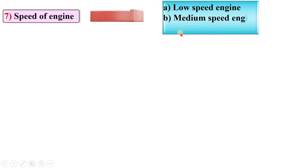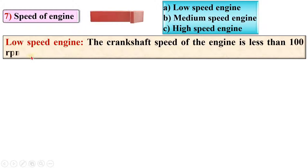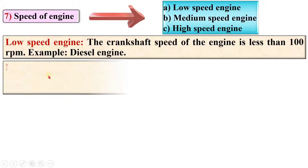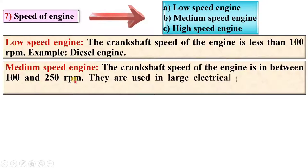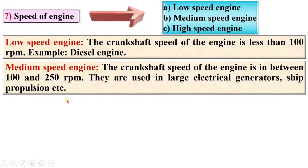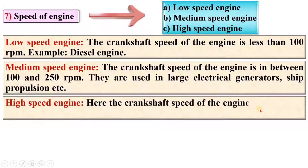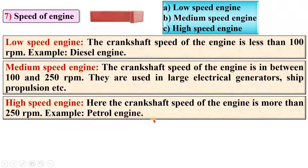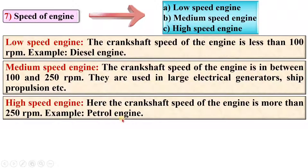According to the speed of the engine, IC engines are classified as low-speed, medium-speed, and high-speed engines. In a low-speed engine, the crankshaft speed is less than 100 rpm — example: diesel engine. In a medium-speed engine, the crankshaft speed is between 100 and 250 rpm, used in large electrical generators, ship propulsion, etc. In a high-speed engine, the crankshaft speed is more than 250 rpm — example: petrol engine.